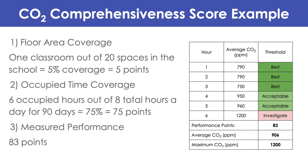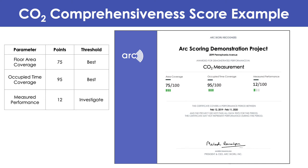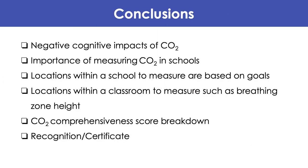Here is an overall CO2 comprehensive score example. With floor area coverage of 5% — one classroom out of 20 spaces measured — you get five points. With six occupied hours out of eight measured for 90 days, you get 75% occupied time coverage. With 83 points for measured performance, five out of six hours under 1,000 ppm, the end product shows all three scores out of 100. One certificate might show low area coverage but long measurement duration and decent results; another might show high area coverage and most occupied time covered, but poor CO2 levels.